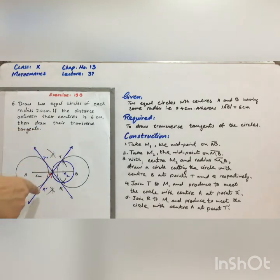Thus, T R dash and T dash R are the two lines which are the common tangents to the circles with centers A and B. Line T R complement and T complement R are the required tangents.